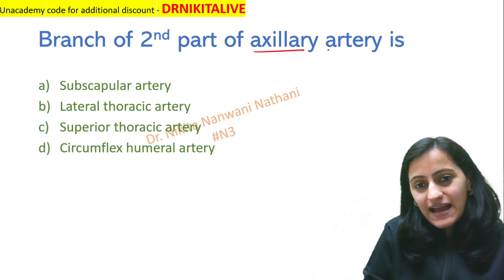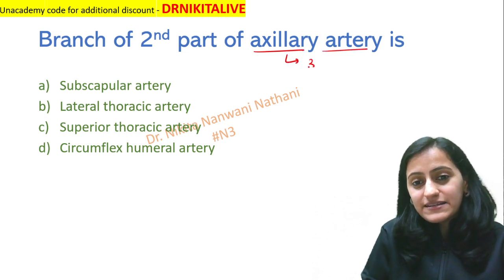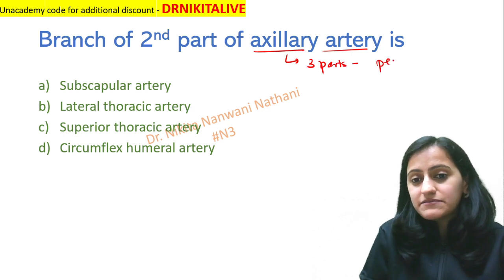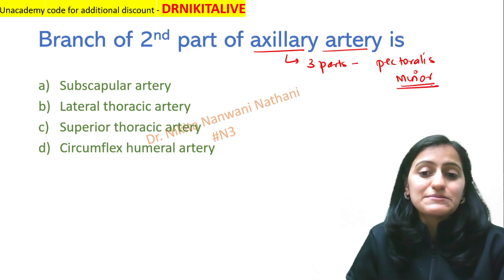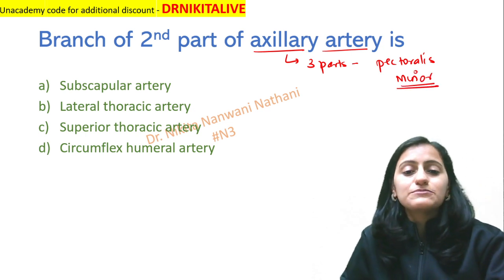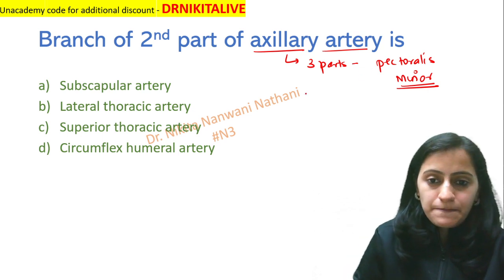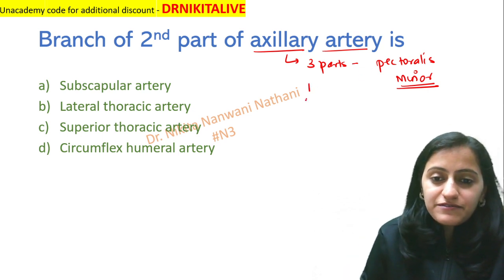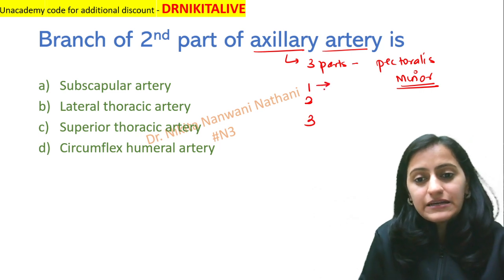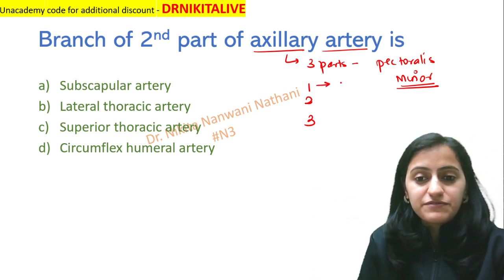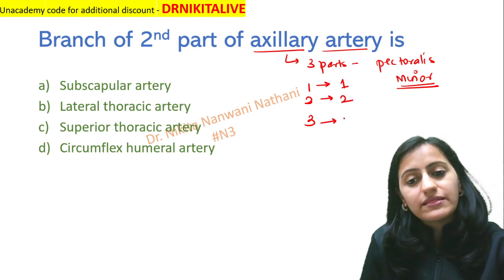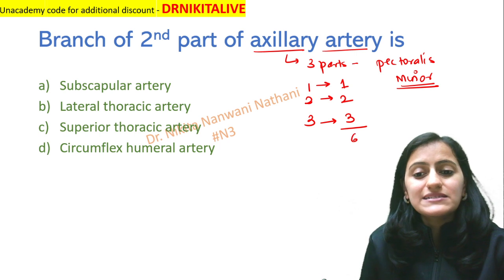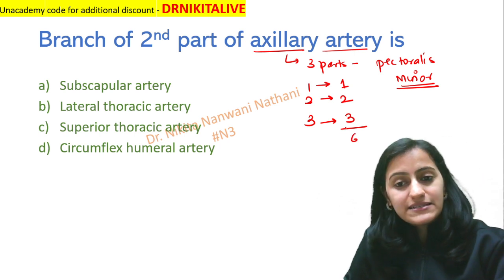First, to understand the axillary artery: it is divided into three parts by pectoralis minor — not pectoralis major, it is pectoralis minor. We can remember the branches by a story mnemonic. The first, second, and third parts give the respective number of branches: first part gives one branch, second part gives two branches, and third part gives three branches — so there are six branches in total from the axillary artery.